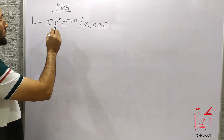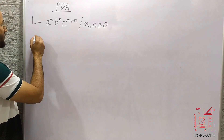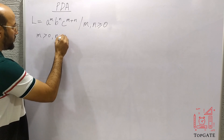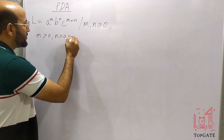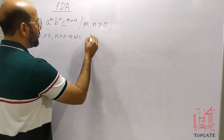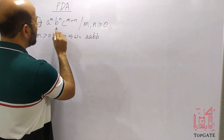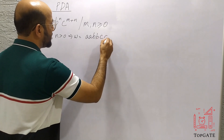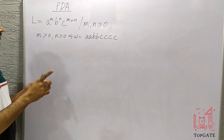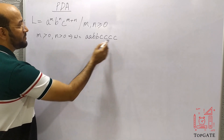First, if we take the value of m greater than zero and n greater than zero, we have a's, b's, and c's. If we take m equals two and n equals two, then the string w will be a, a, b, b, and c will be the addition of a and b — that is c, c, c, c. So if m and n are both greater than zero, we get this kind of string, and we need to design a PDA that accepts this string.